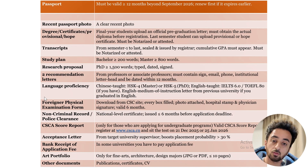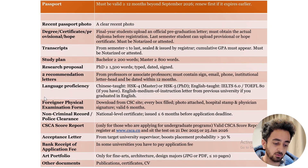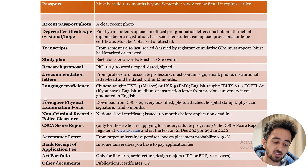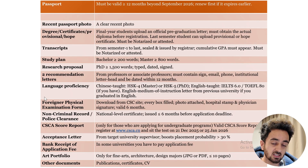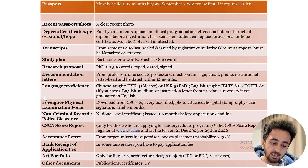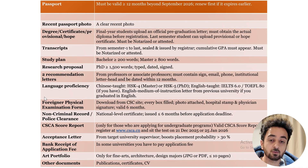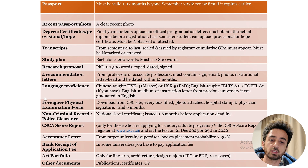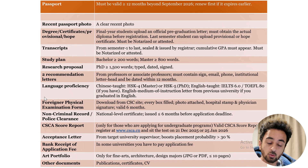There is also a CSCS score report — this document is only for bachelor students. This year China introduced a new test. The website is www.csc.cn — register there for the upcoming test, take it, and provide the score report; otherwise you are not eligible. For master's and PhD students, you need an acceptance letter. Send emails to professors now — if they're willing, they'll provide an acceptance letter that you upload on the CSC portal.